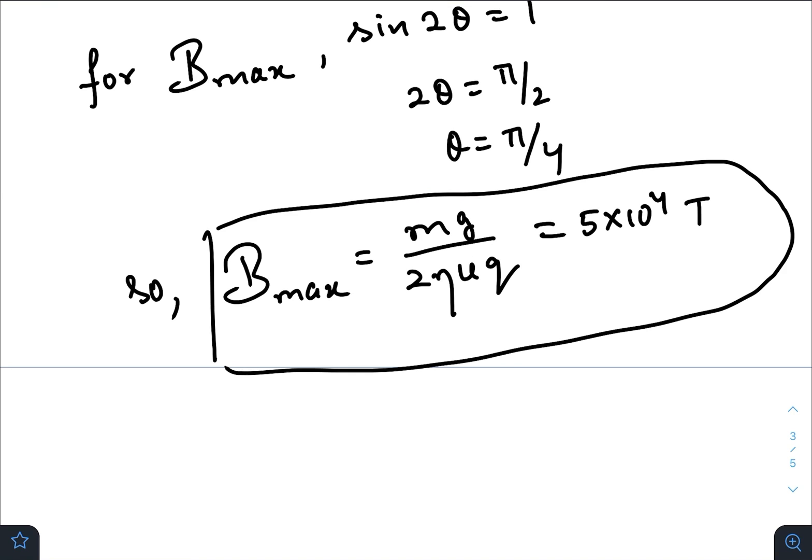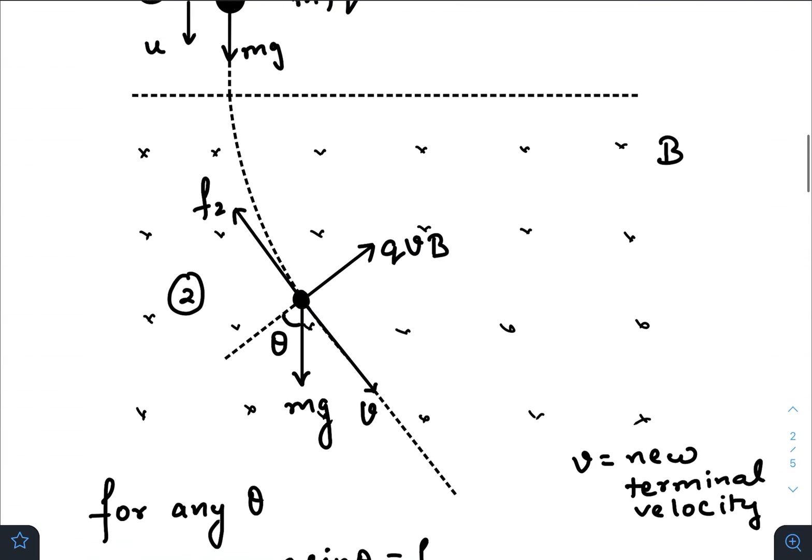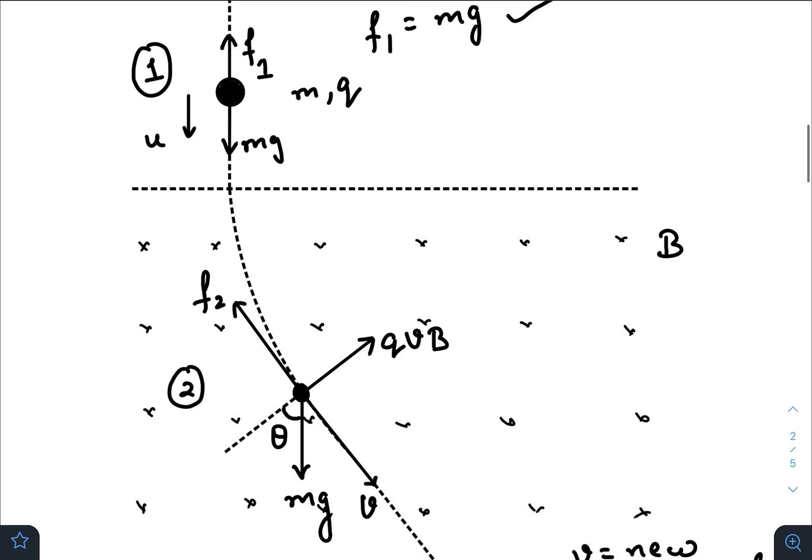So this is all, this is our final answer. If you just put the values you will get 5 times 10 to the power 4 Tesla. So here the actual path of the charge is the main idea.